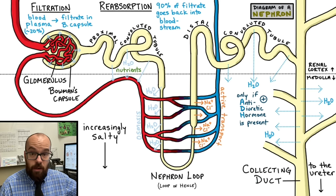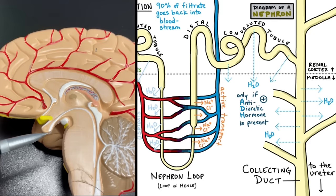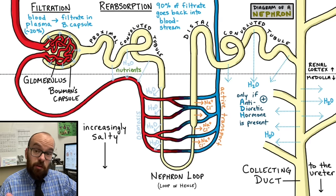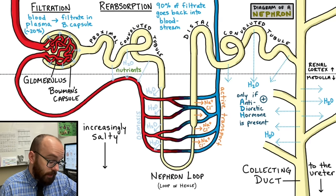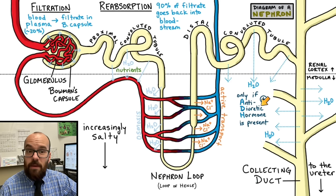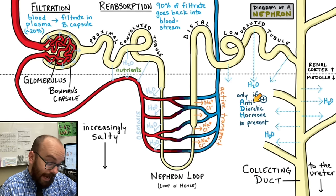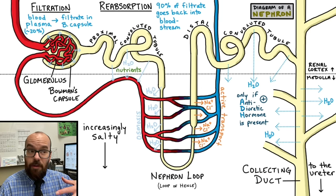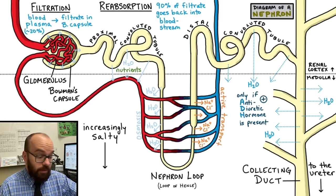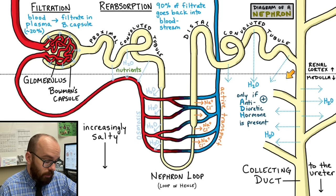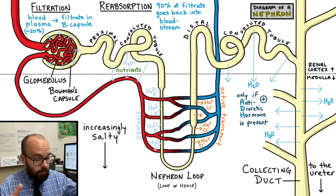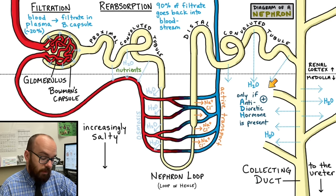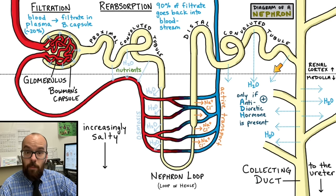ADH stands for anti-diuretic hormone. It's a hormone released by the pituitary gland — a little gland hanging off the front of your brain. It's also known as vasopressin, but ADH describes what it does well. A diuretic is anything that makes you pee more, and an anti-diuretic is something that makes you pee less. So anti-diuretic hormone makes you pee less. It causes the distal convoluted tubule and the collecting duct to leak more water, so water leaves and enters back into the bloodstream.